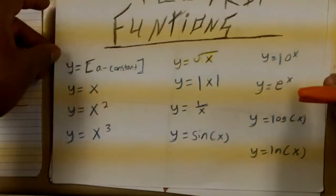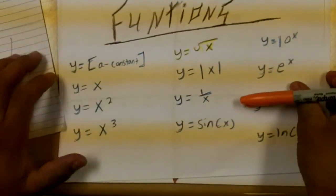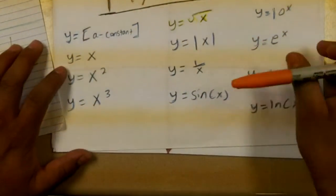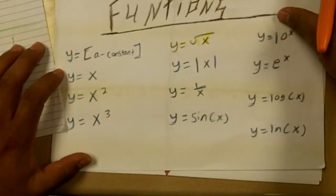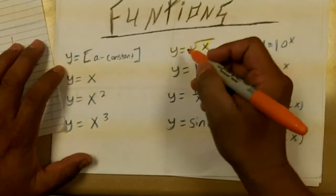Hi, my name is Abner and I am doing the toolkit function. There are 12 total and I am doing y equals the square root of x. That's one right here.